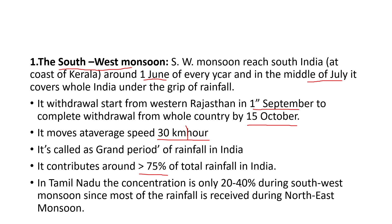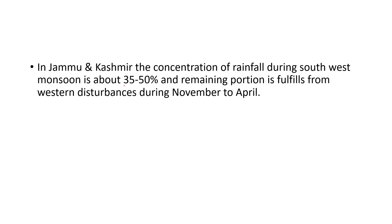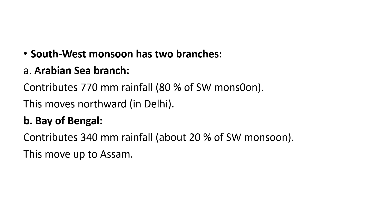In Tamil Nadu, the contribution is only 20-40% during southwest monsoon since most of the rainfall is received during northeast monsoon. In Jammu and Kashmir, the concentration of rainfall during southwest monsoon is about 35-50% and the remaining portion is fulfilled from western disturbances during November to April. Southwest monsoon has two branches: the Arabian Sea branch, which contributes 770 mm rainfall and moves northward to Delhi, and the Bay of Bengal branch, which contributes 340 mm rainfall and moves up to Assam.